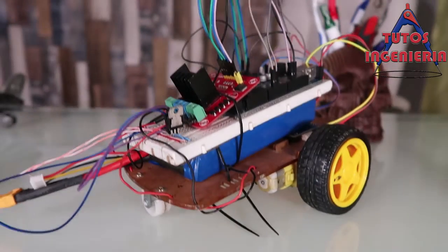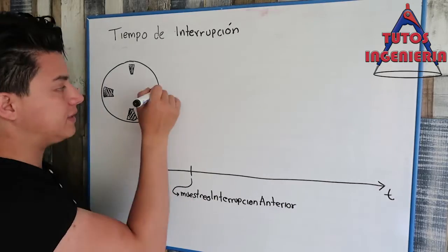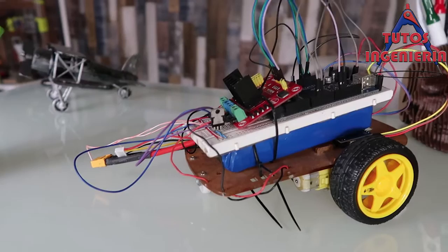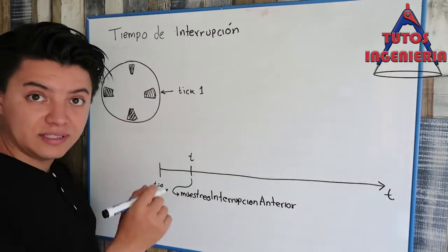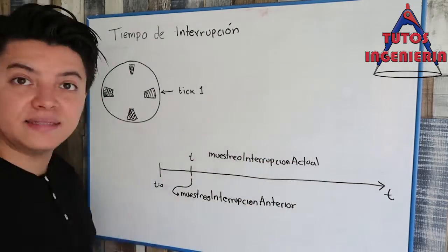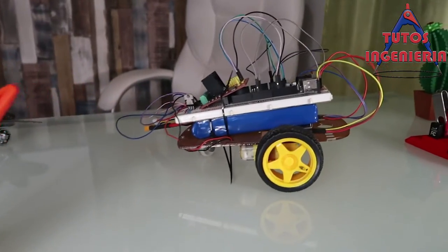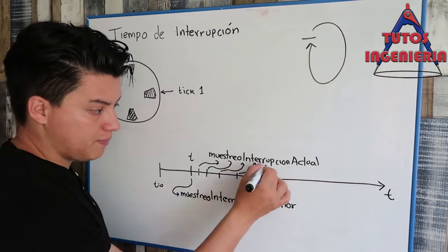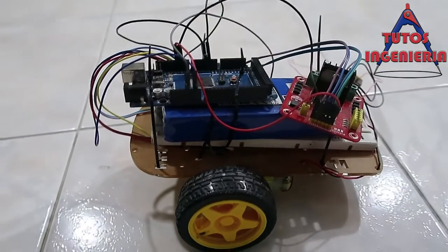Hi everybody. In this video we are going to see how the interruption function is used on the Arduino platform. This will help us to measure the time stamp between ticks of the encoder, and from that we can find the speed of the wheels, which are requirements for the control of our project.